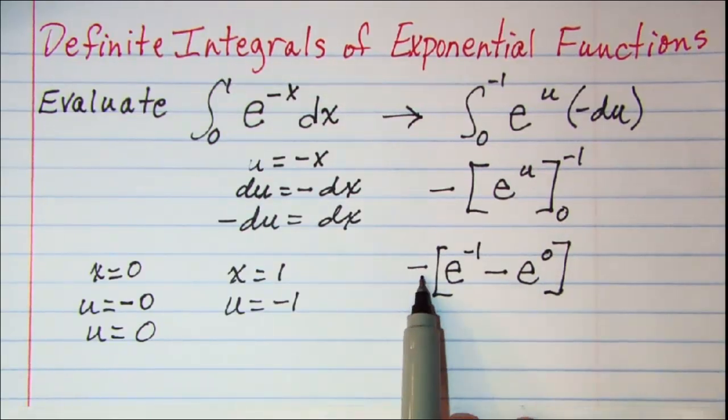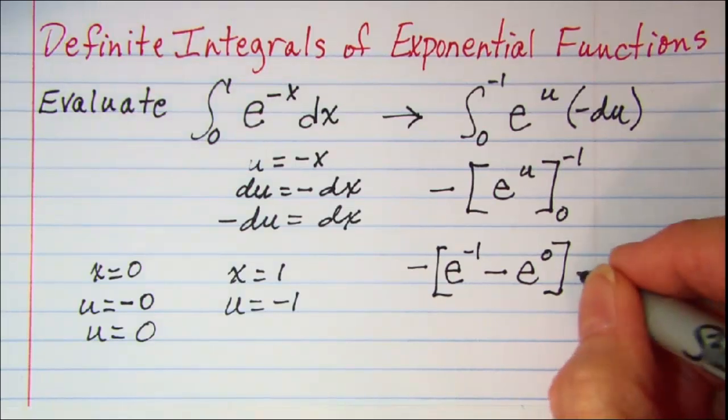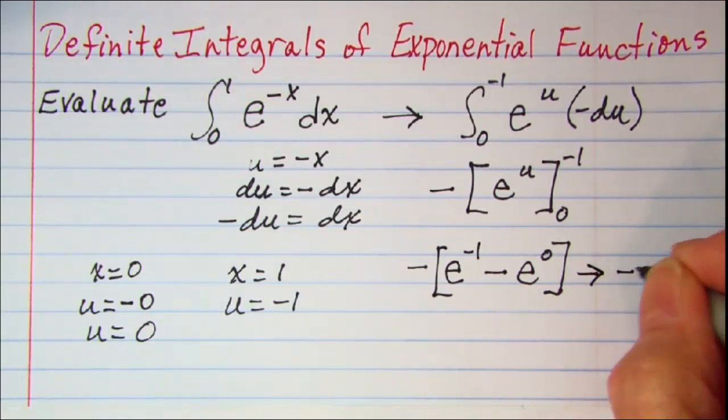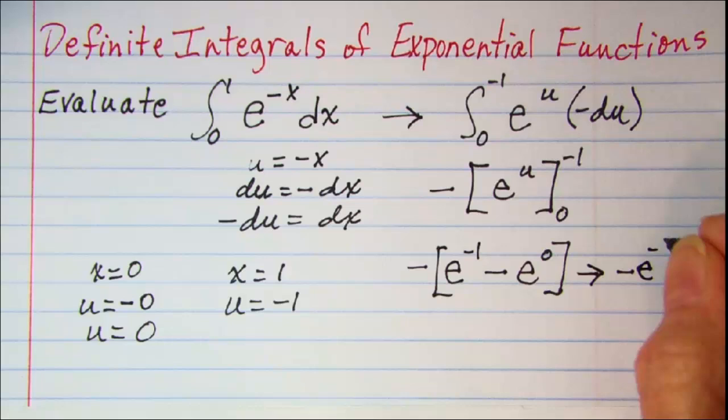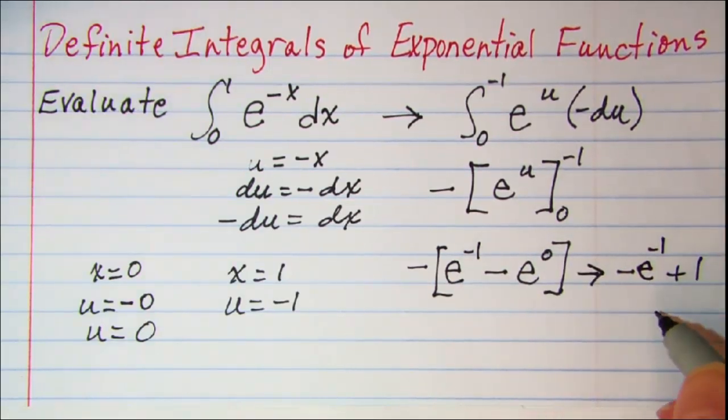If we distribute this negative through here we get negative e to the negative 1 and then plus 1. This would look better if we put this positive in front, so 1 minus e to the negative 1.